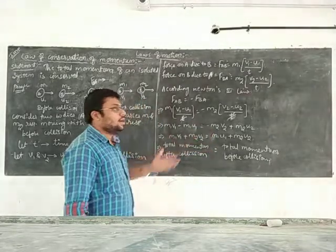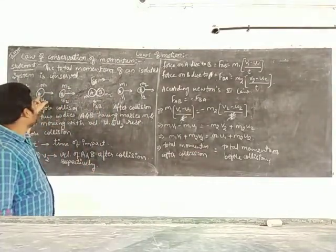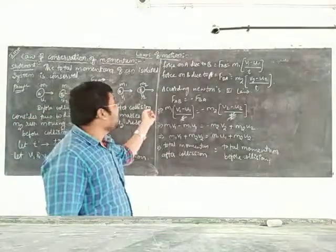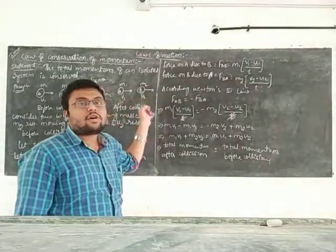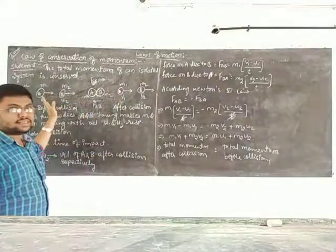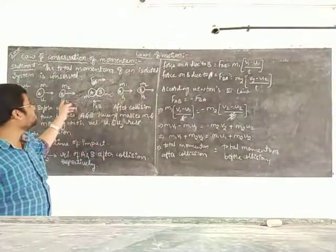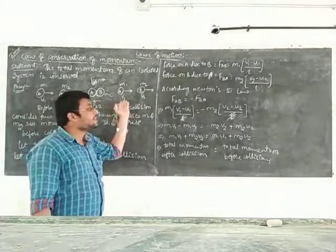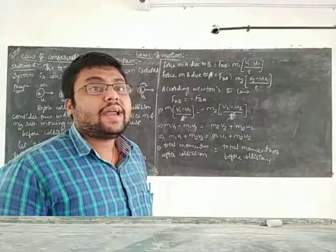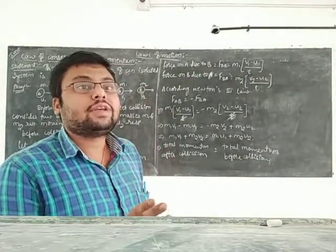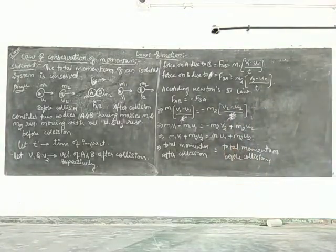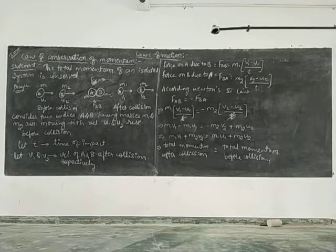After collision, the velocity of A decreases but that decrease in velocity is compensated by the increase in velocity of B. The decrease in final velocity of A is compensated by the increase in final velocity of B, so the total momentum before and after collision remains constant. This is very important from the point of your examination — take a screenshot and note it in your notes.